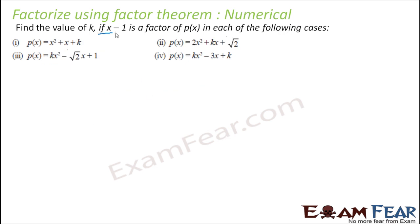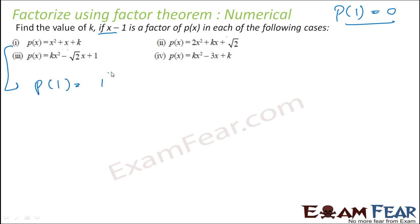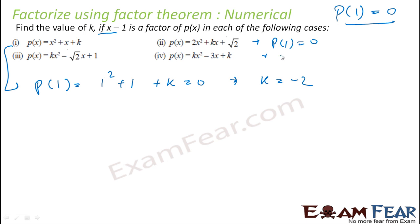Find the value of k if (x minus 1) is a factor. Since (x minus 1) is a factor, p(1) equals 0 by factor theorem. For the first polynomial, p(1) is: 1 square plus 1 plus k equals 0, which gives k equals minus 2. For the second, find p(1) equal to 0: 2 into 1 square plus k into 1 plus root 2 equals 0. Equate this to find the value of k. You can do the remaining ones similarly.